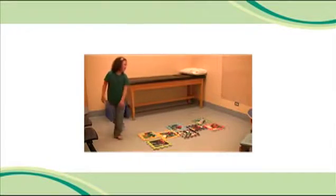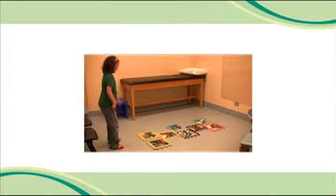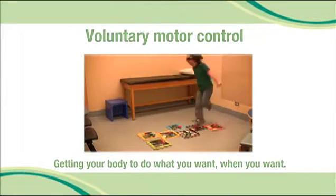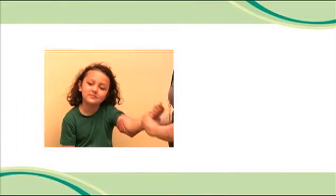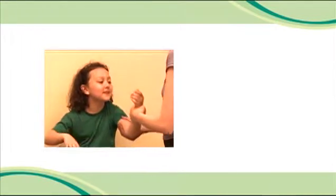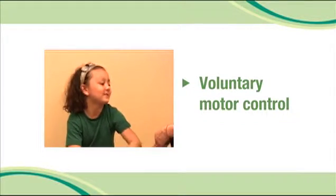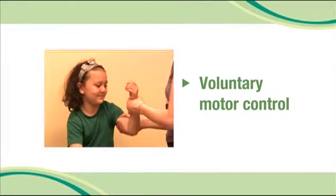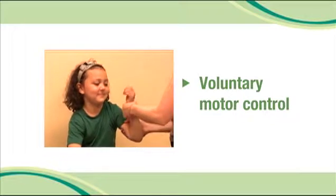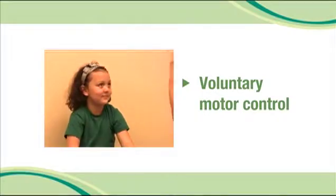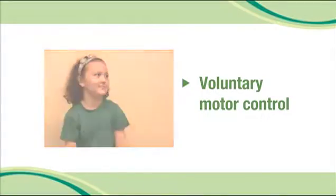Let's return to Julia, who has typical muscle tone, and talk about voluntary muscle control — or getting your muscles to do what you want, when you want. As the therapist moves Julia's arm back and forth, you can see that Julia is relaxed and her muscles don't resist this passive movement. However, when Julia wants to put her headband on, she easily resists the therapist, as her muscles quickly and smoothly transition from being relaxed to doing what her brain tells them to. This ability to get your body to do the things you want to do is called voluntary motor control.